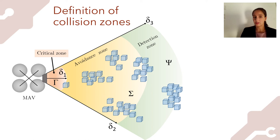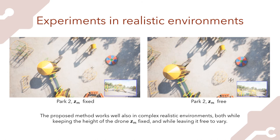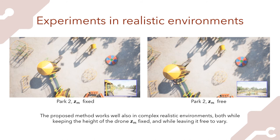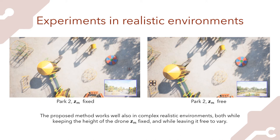To test our approach we performed experiments in simulation using Unreal Engine 4 with the AirSim plugin, choosing environments that could be realistic in that they present a lot of obstacles. In the first video the robot is commanded to always keep the same height, whereas in the second one the height is left free. We performed a total of 30 experiments and never observed collisions.